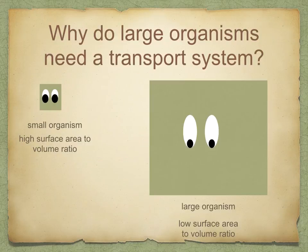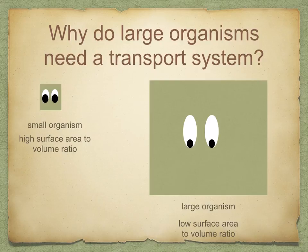So why do large organisms need a transport system? All organisms need to exchange materials between themselves and their environment. In small organisms, for example the little cell on the left there, this exchange takes place over the surface of the body. However, if you increase in size, the surface area to volume ratio decreases, so you need a special exchange surface to absorb nutrients and gases and to remove excretory products.